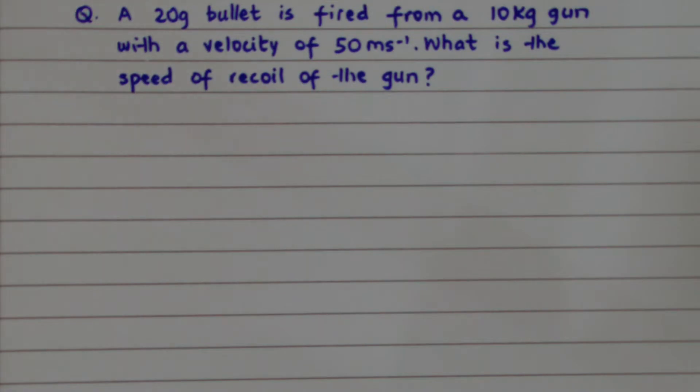In this video, I'll solve a numerical problem based on the law of conservation of momentum. Let's read the problem. A 20 gram bullet is fired from a 10 kg gun with a velocity of 50 meters per second. What is the speed of recoil of the gun?